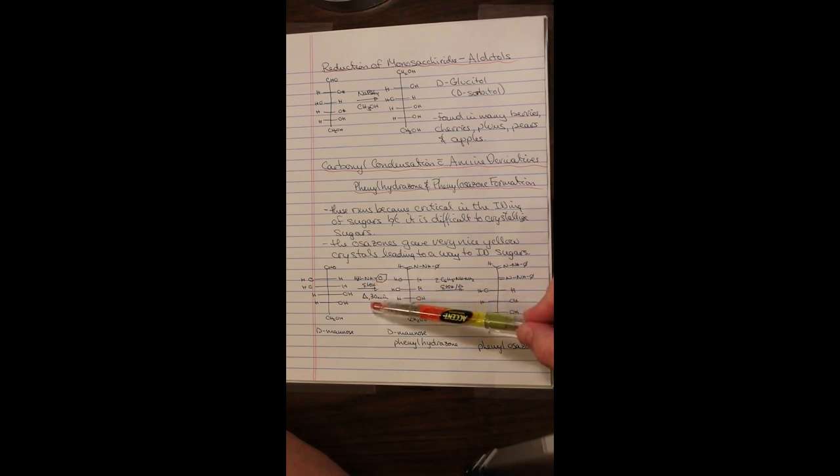In ethanol, you heat for 30 minutes, and you create D-mannose phenylhydrazone. If you treat this again with phenylhydrazine, you can oxidize the alpha position and create this diphenyl osazone species, which will be crystalline and easy to isolate and purify.